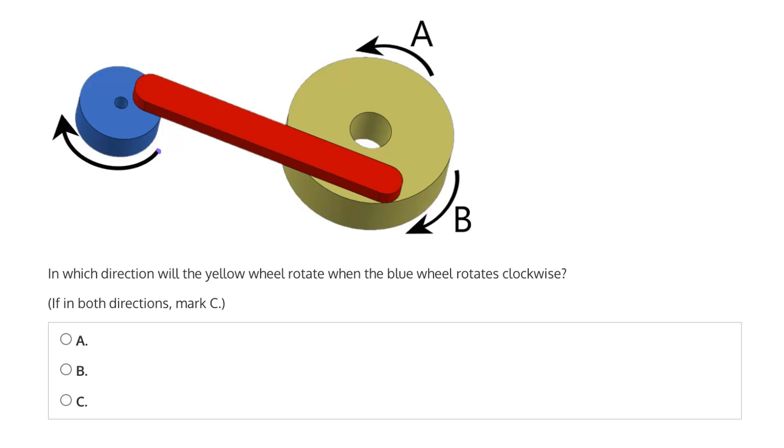To answer this question, let's consider what happens to the yellow wheel as the blue wheel makes one full rotation clockwise.